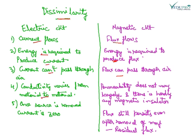Permeability does not vary largely and there is hardly any magnetic insulator. Once source is removed, current is zero, but flux still persists even after removal of MMF. This is known as residual flux.